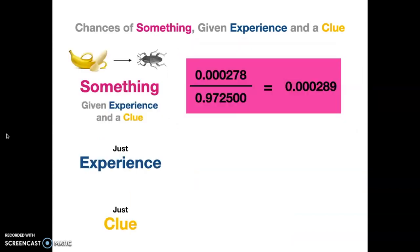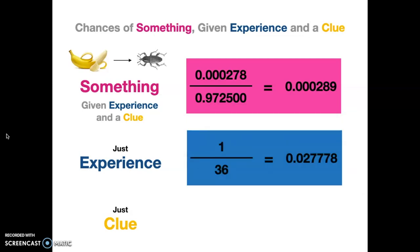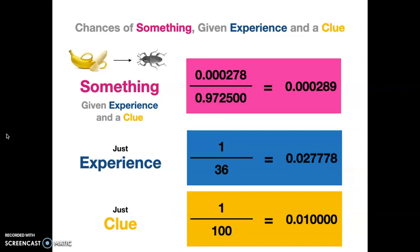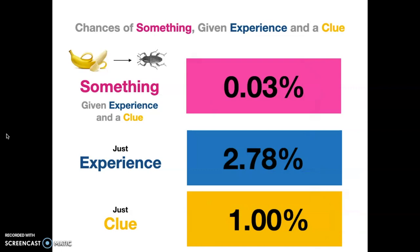So let's compare that to our other methodologies and see what we would have gotten had we not used this kind of thinking. Well, if we were using just experience, going back to that, we would have said there's about a 2.7 or 0.02777 chance that there is going to be a bug in the banana. And if we use just the clue, we'd say there's about a 1% chance. Let's turn those into percentages.